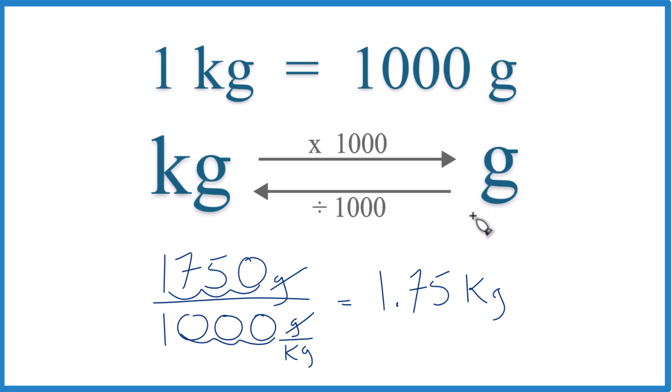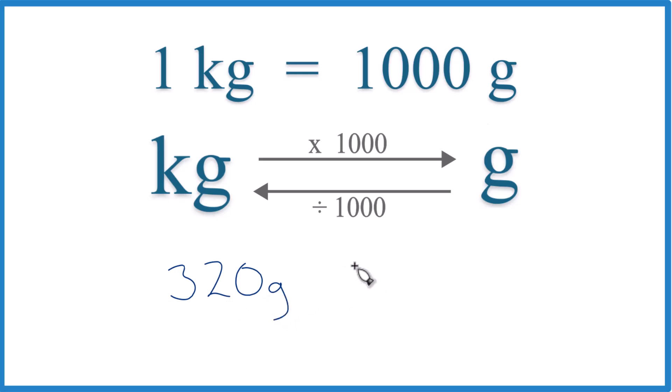Let's try a different one. This gives students problems sometimes. Convert 320 grams to kilograms. So we take our grams, we divide by 1,000 grams per kilogram. So grams cancel out. We'll be left with kilograms. 1, 2, 3. So we end up with 0.320, or just 0.32 kilograms. Not too bad.